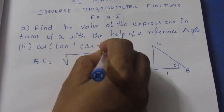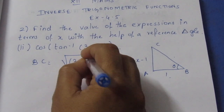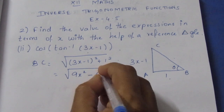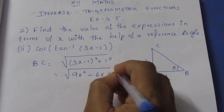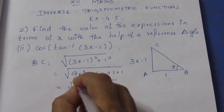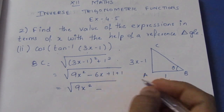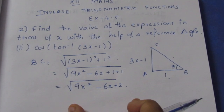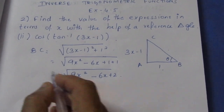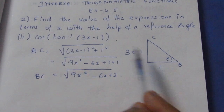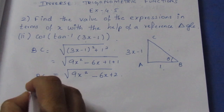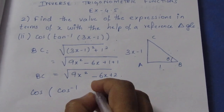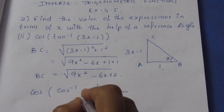BC is equal to the square root of the sum of squares. We have (3x-1)² + 1², which expands using the (a-b)² formula: 9x² - 6x + 1 + 1, giving us √(9x² - 6x + 2).